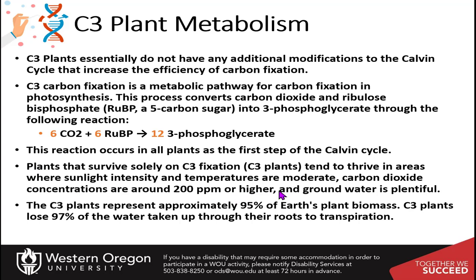C3 plants tend to thrive in areas where sunlight intensity and temperatures are moderate, with carbon dioxide concentrations at least 200 parts per million or higher. Moderate temperatures allow the stomata to stay open and have transpiration going on all the time. Groundwater also needs to be plentiful to replace water lost through transpiration. C3 plants represent about 95% of Earth's plant biomass, and they typically lose about 97% of the water taken up through their roots through transpiration — essentially, plants are sweating all the time.